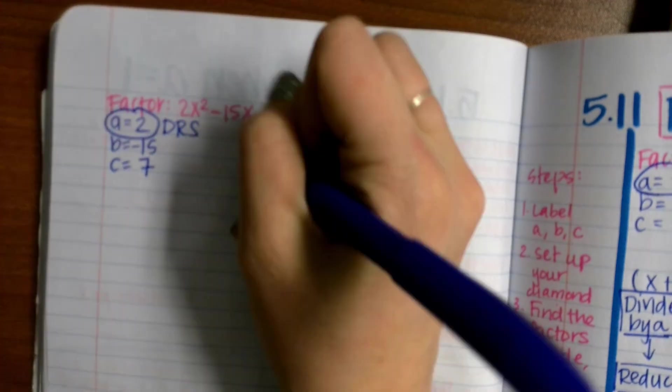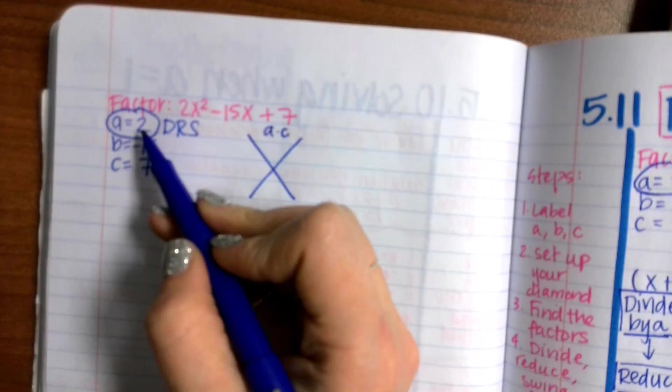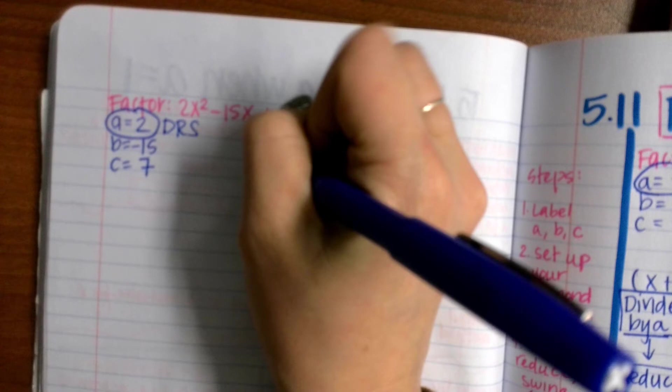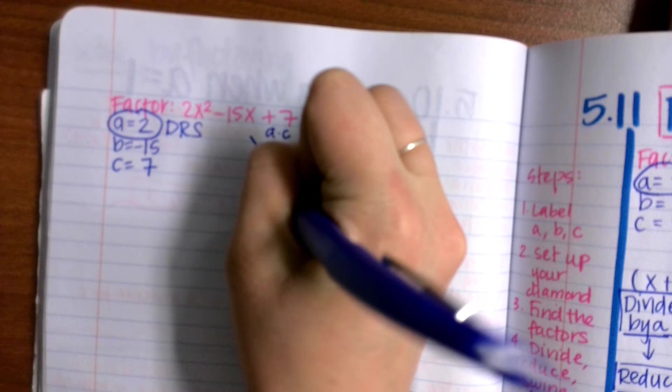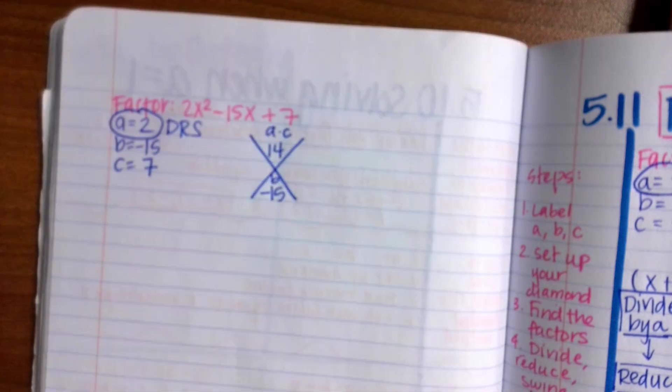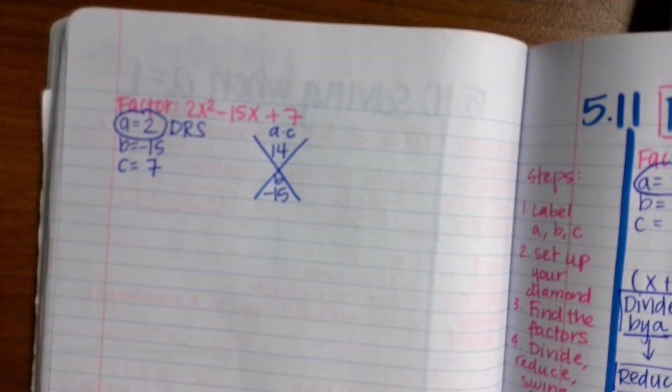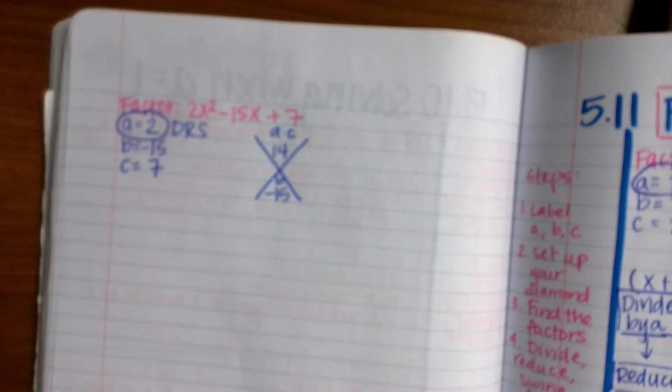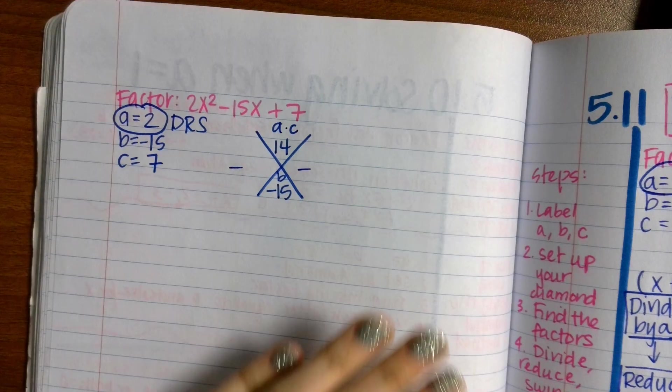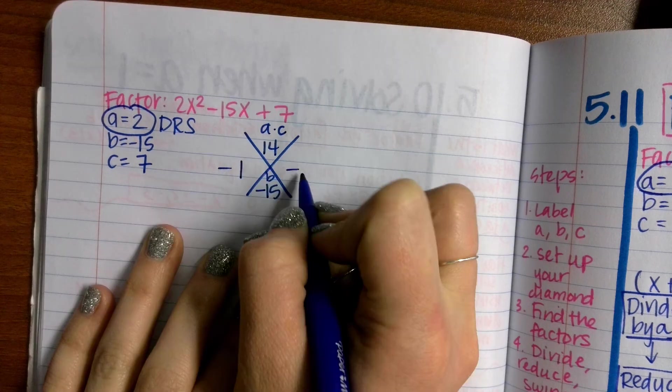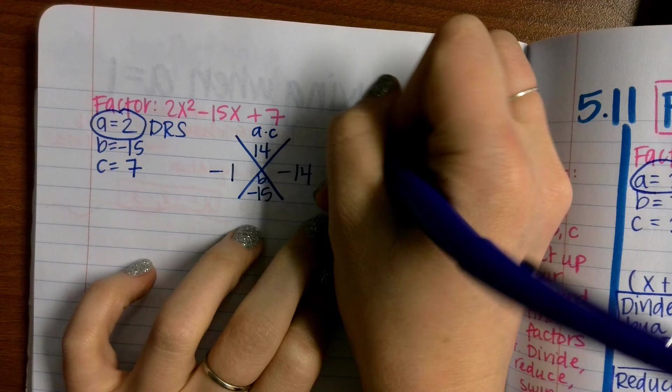Set up my diamond. A times C is 2 times 7, which is 14. And C is negative, or B is negative 15 rather. I'm looking for factors of 14 that are going to add to be negative 15. Both of these need to equal a negative number. Negative 1 and negative 14. Write my factors out. X minus 1, X minus 14.